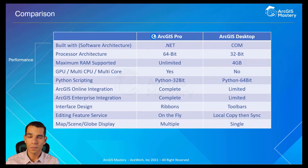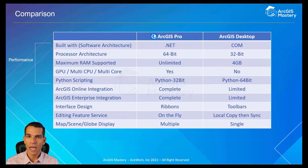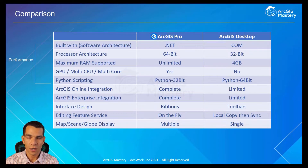ArcGIS Pro supports multi-core, multi-CPU, and GPU — graphics processing unit. That means ArcGIS Pro can use different processors and CPU resources at the same time, which ArcGIS Desktop cannot do. All of these differences mean that ArcGIS Pro will have better performance and will be able to use the maximum power of any computer it runs on, which ArcGIS Desktop cannot do because it is limited in the resources it can use.